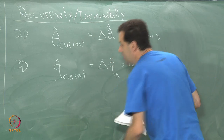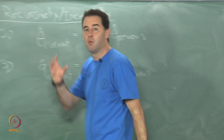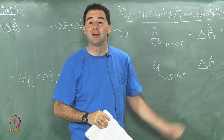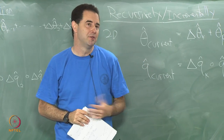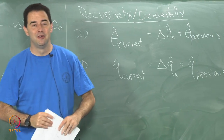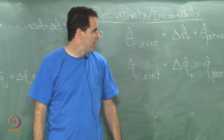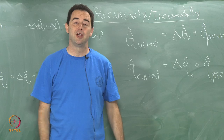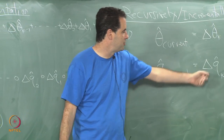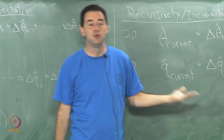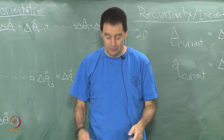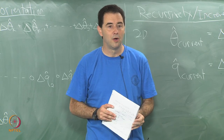You take the magnitude of the 3D gyro reading in radians per second — that tells you how far you've rotated — and the direction of that 3D vector tells you the axis of rotation. Form a simple quaternion, multiply it on, and do these simple updates. When you do that, you are integrating the gyro readings.